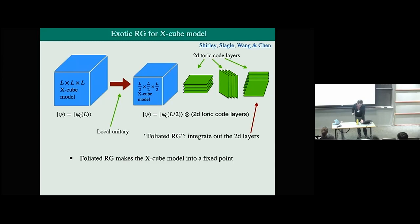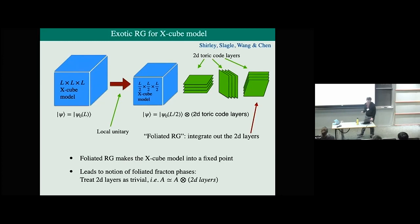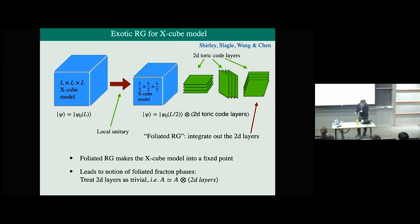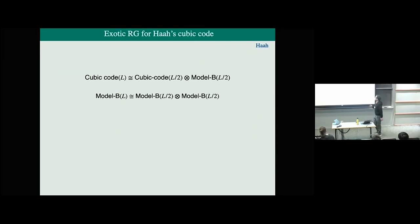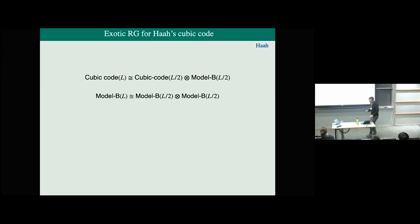This leads to an associated notion called foliated fracton phases, where we think of stacks of 2D layers as trivial. If we have a system A, we view it as being in the same phase as A stacked with a bunch of 2D layers. That notion of foliated fracton phases goes with foliated RG fixed points. There's also a version of this exotic RG story for Haas's code: the cubic code is equivalent under a local unitary to itself and something called model B on smaller lattices.